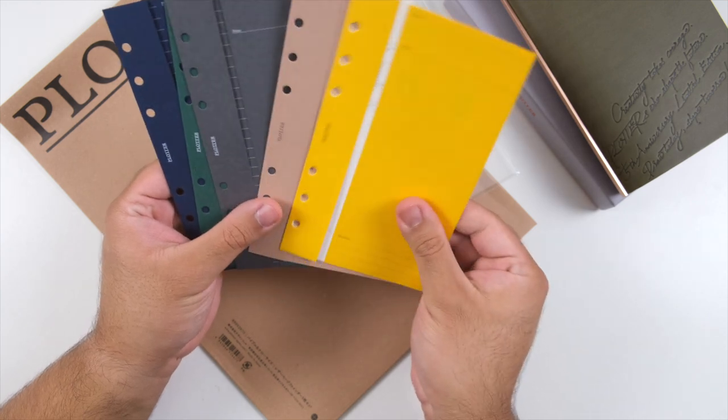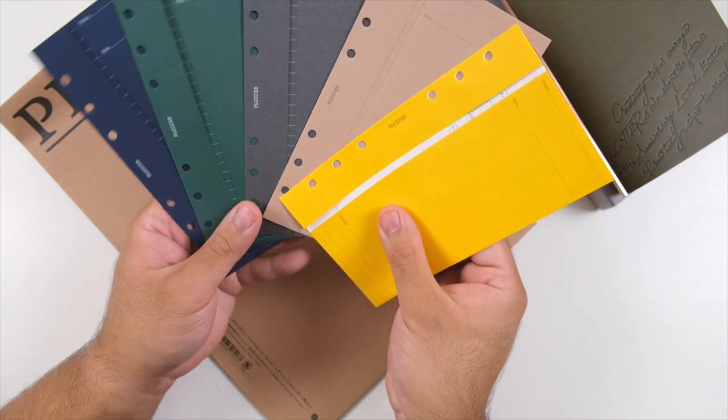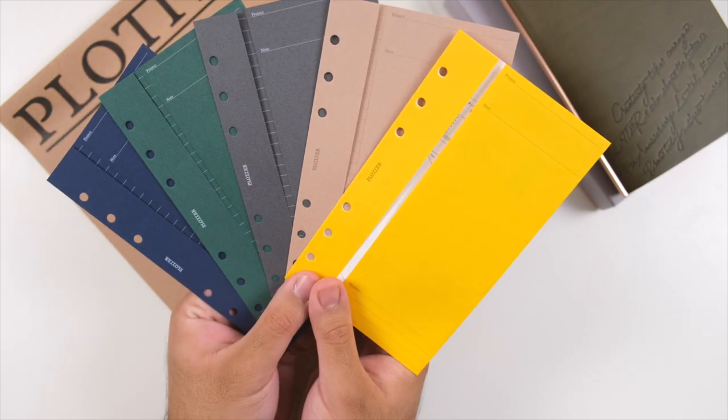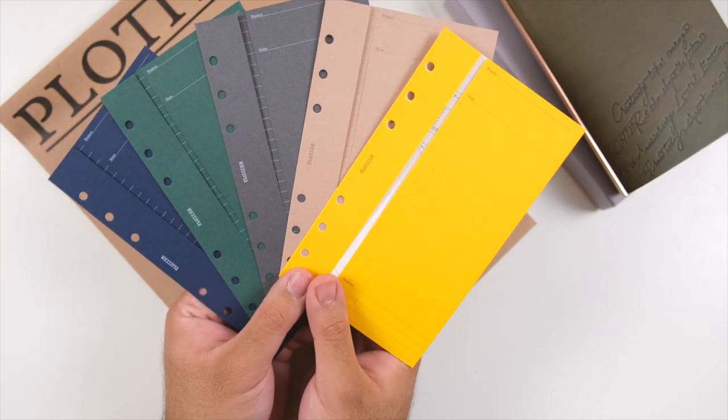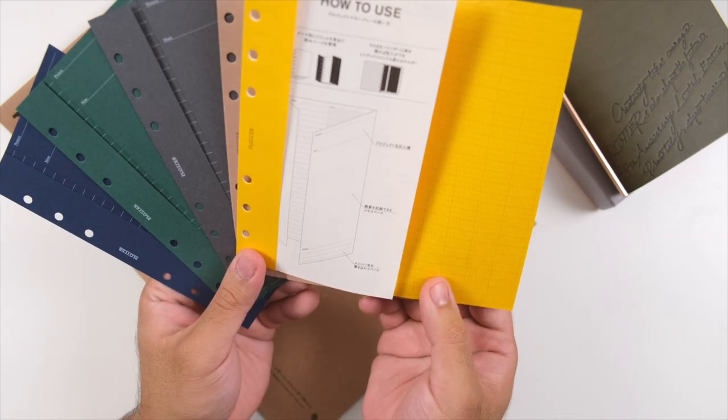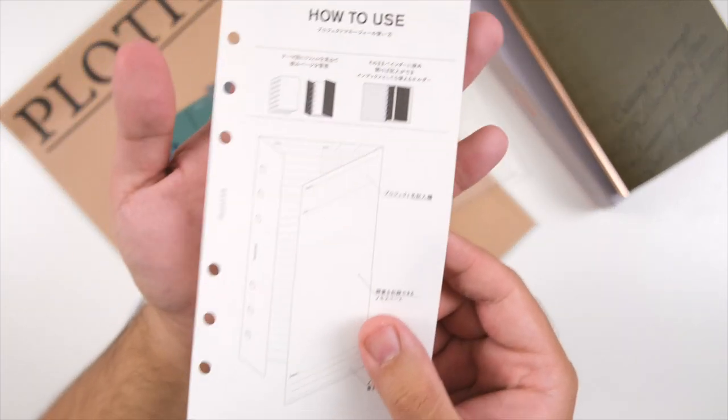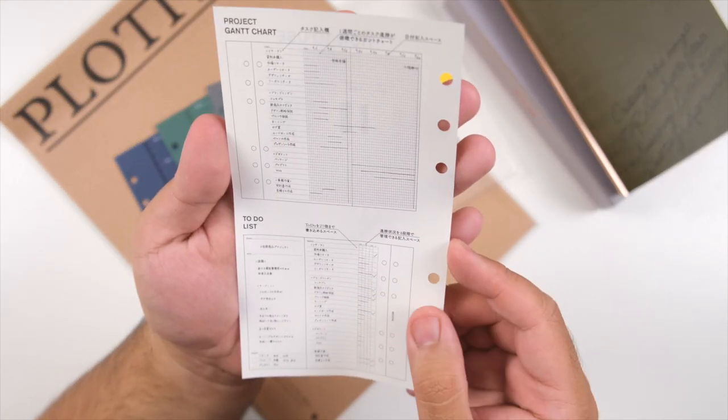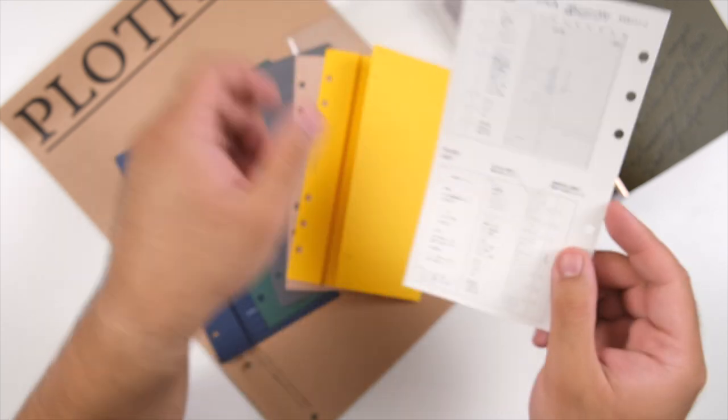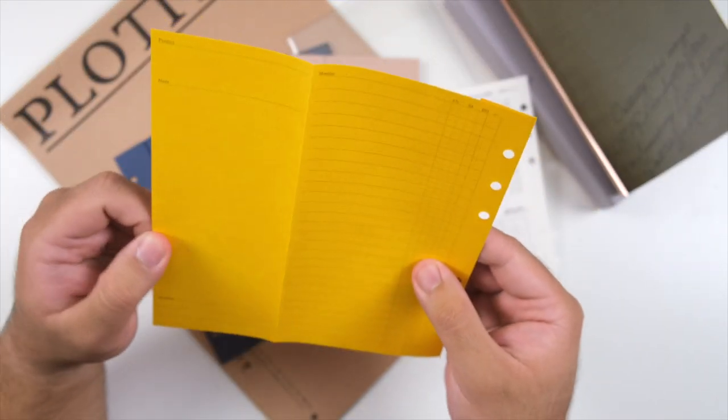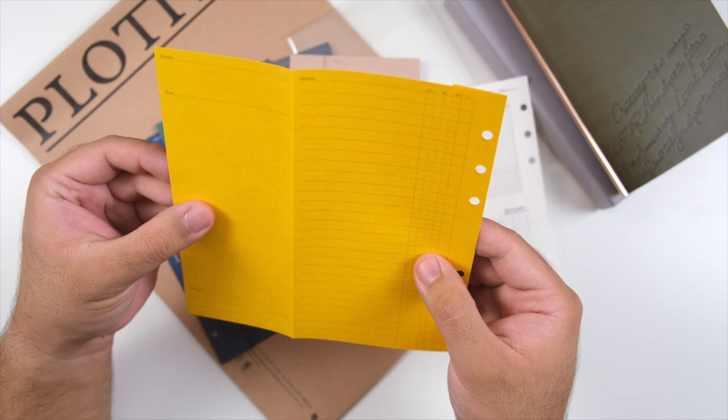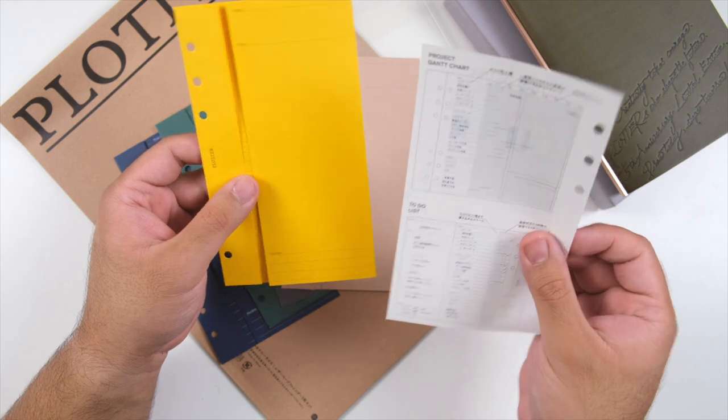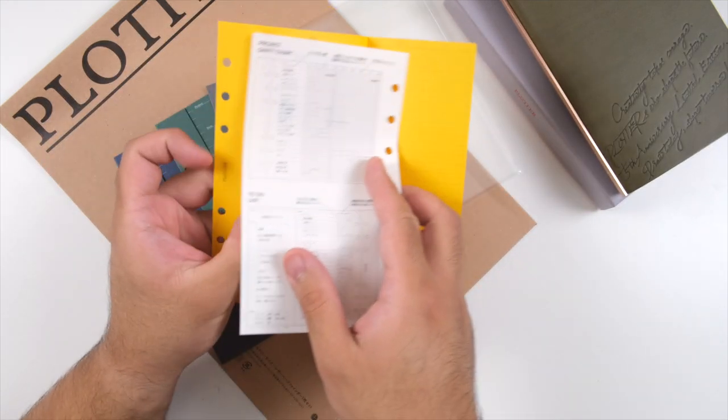This is one of the awesome things about the Plotter system. They have these folders called project managers and they did a special set for the fifth anniversary in these colors: this bright yellow, this beige, this dark slate gray, this forest green, and this lovely navy. The thing I like about this is it has a Gantt tracker chart inside but it has these to-do lists on the back.